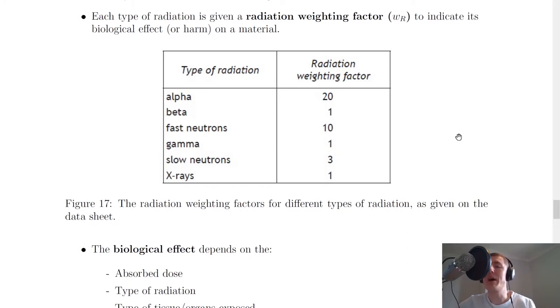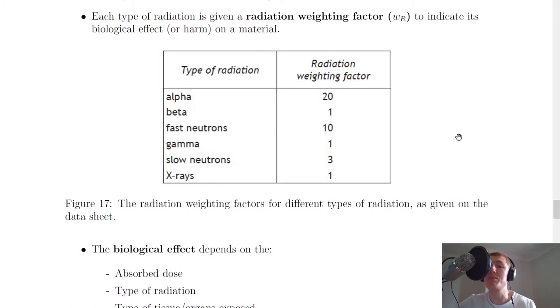This links back to when we looked at the types of radiation, where we saw that alpha radiation was the most damaging when considered inside the body. This is because it is the most ionising type of radiation — in other words, it packs the biggest punch.